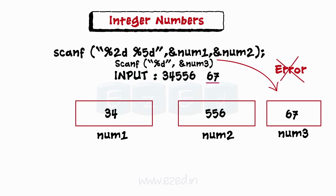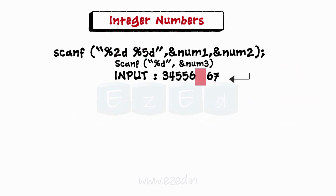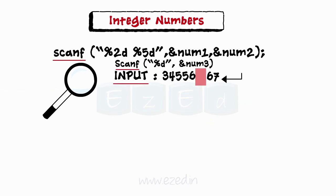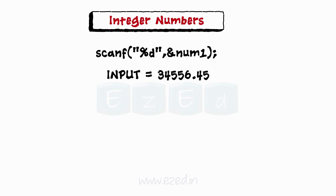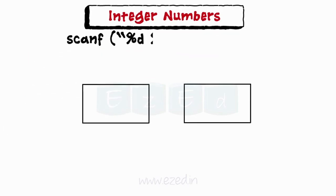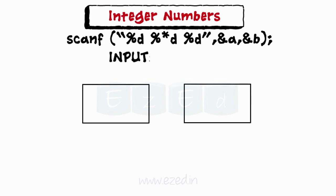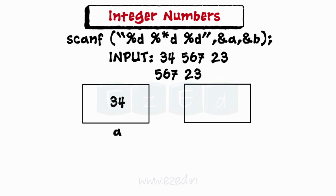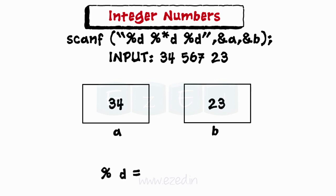We can eliminate these kinds of errors by removing the width specification in the format string. White space characters like spaces and new lines are used to separate input data items; when scanf searches the input line to read a value, it always bypasses white spaces. If a floating point number is entered instead of an integer, the fractional part would be truncated. We can skip an input field by specifying an asterisk in the input field. For example with input 3456723, A is assigned 34 and B is assigned 23 as 567 is skipped. The data type character can be preceded by L to read long integers and H to read short integers.